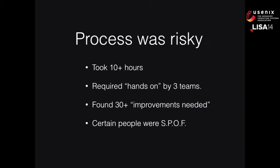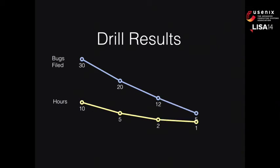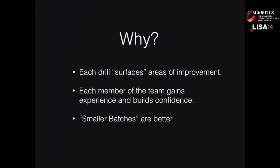Then we started doing that over and over again. First time: 30 bugs, more than 10 hours. A couple months later: 20 bugs, five-hour failover — cut the time in half. Then the next drill: down to two hours. We recently did it in one hour flat. I hope next year at LISA I can say we've gotten down to five minutes, or a single button push, or maybe even fully automatic. When you stress a system like this, it doesn't get weaker — it gets stronger, because it surfaces areas for improvement and gives you an opportunity to make changes.